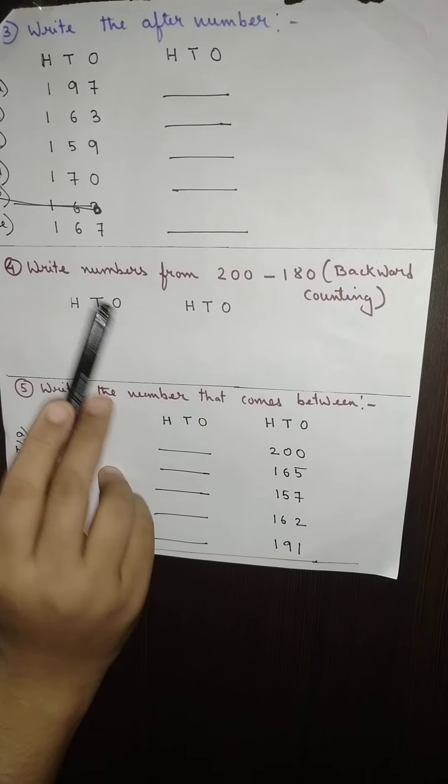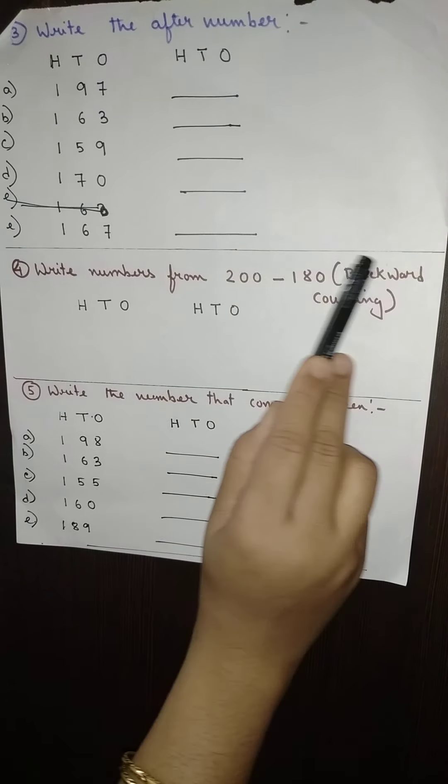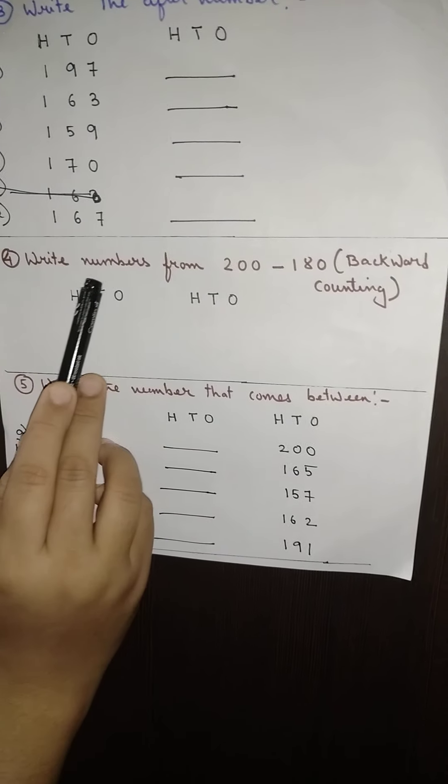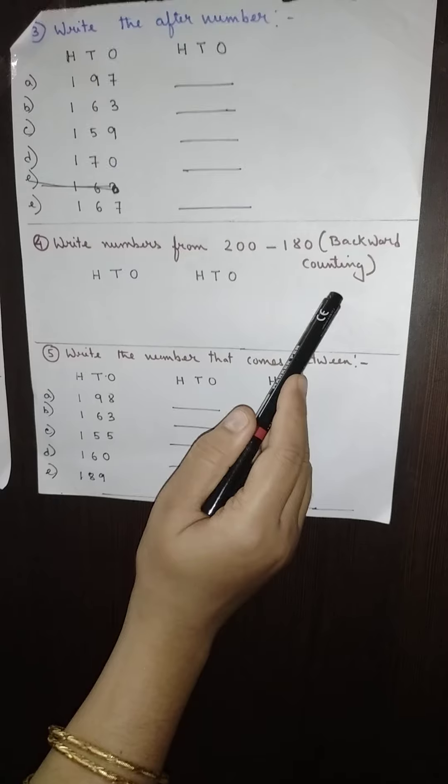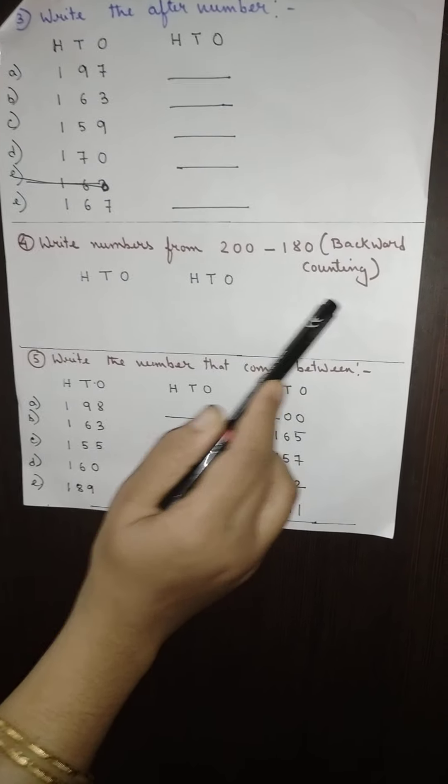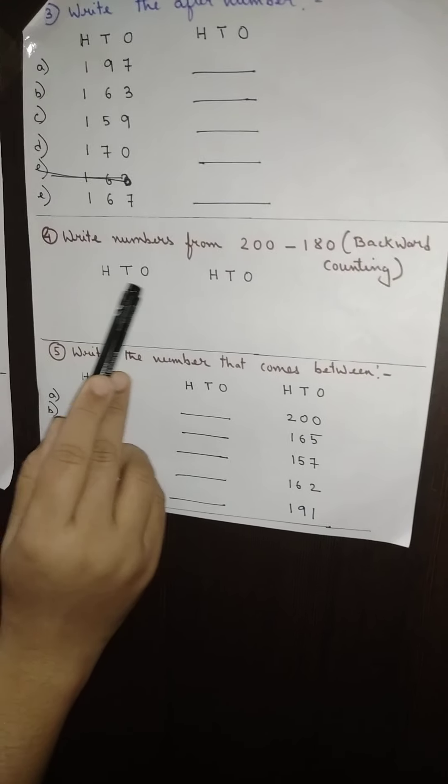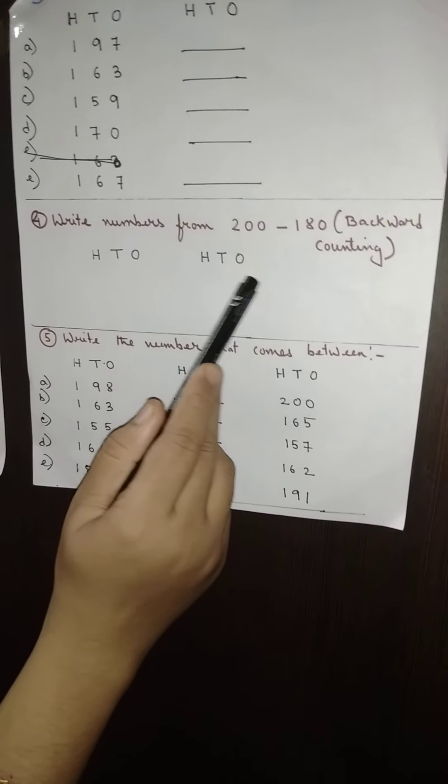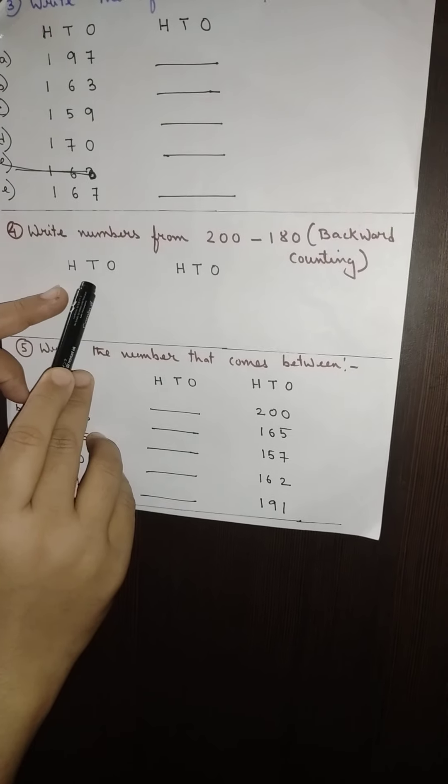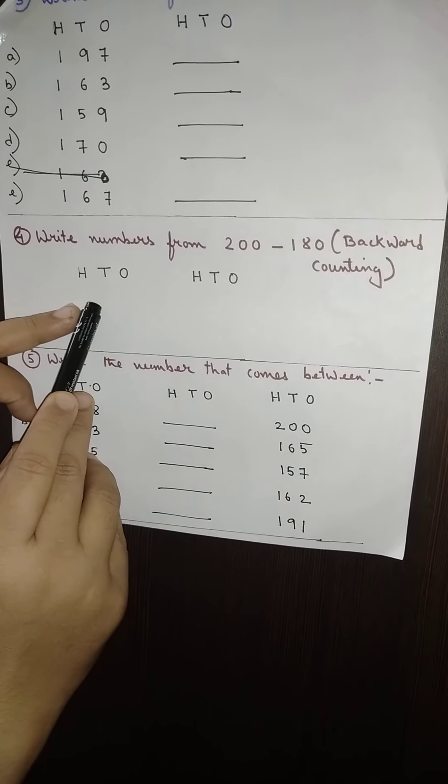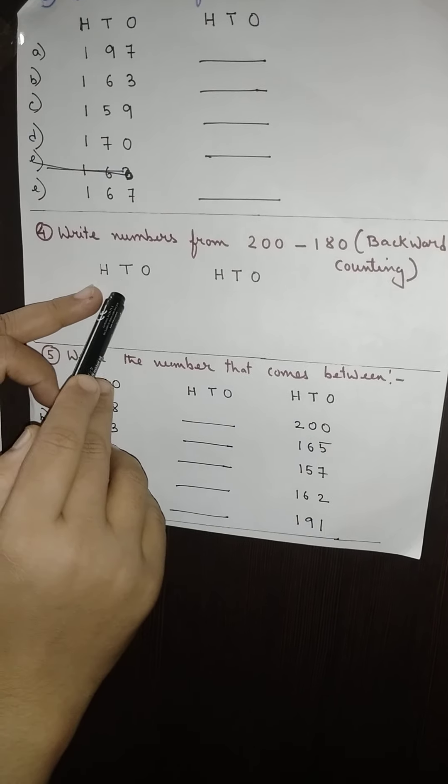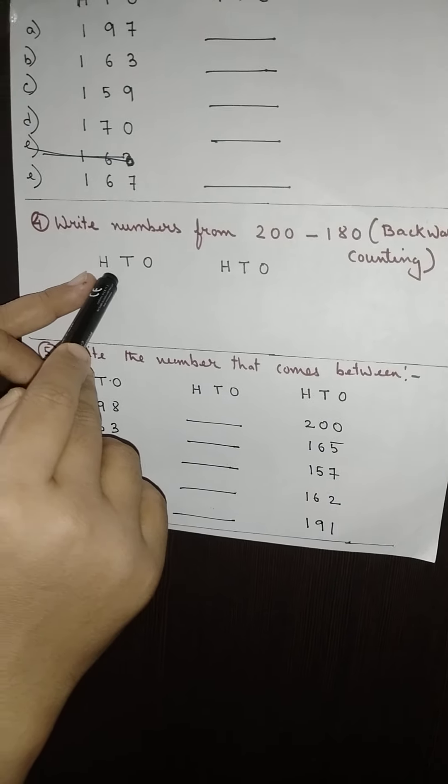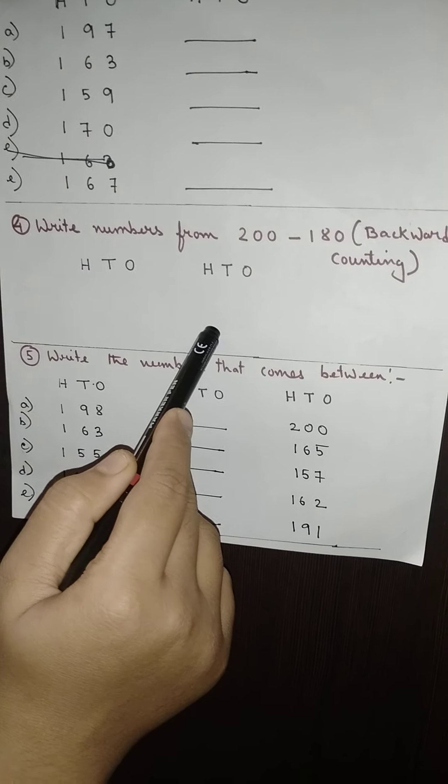Now after you finish you will draw one ending line and come to number 4: write the numbers from 200 till 180. That means here you have to do the backward counting. How you will do? You will make two columns, H T O and H T O, and you will start writing your numbers from 200, 199, 198. In this way you will be coming from 100, you will start your writing from 200 and you will finish at 180.